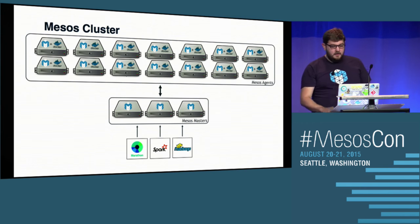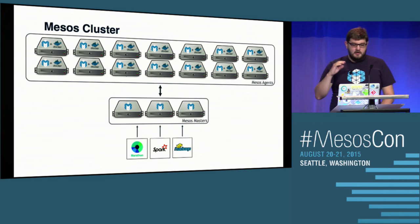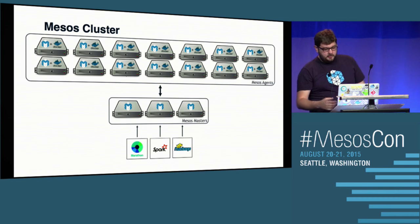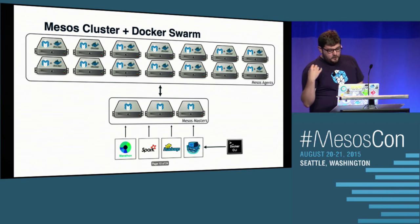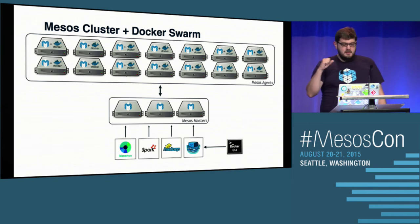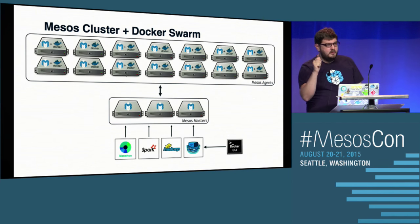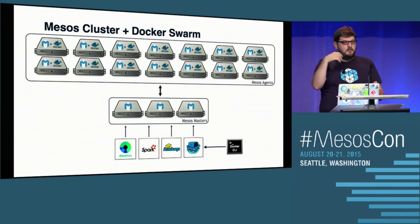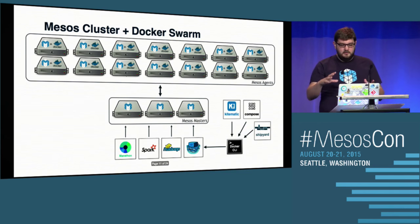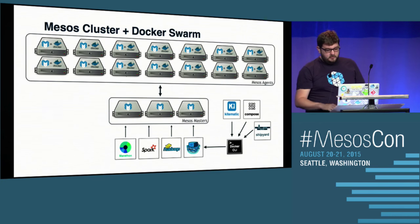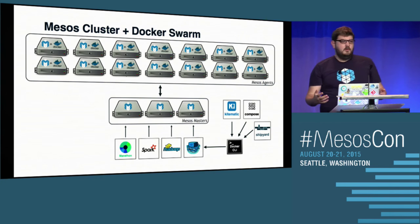Here's a quick example. You have a Mesos cluster — at the top you have tons of Mesos agents, in the middle you have Mesos masters, and at the bottom you have frameworks like Marathon or Spark. You can have Swarm as a framework, then use the Docker CLI to talk to Swarm. When you do a Docker run, it asks Swarm to do a run, and Swarm uses offers from the Mesos master to launch a task. The goal is to have any tool using the Docker API and CLI work on your Mesos cluster — for example, using Docker Compose to start your application on your Mesos cluster.